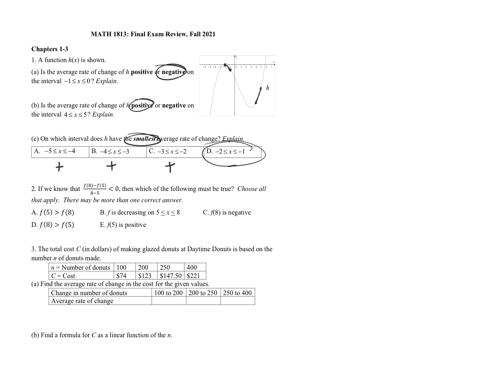Question two. We know that f(8) minus f(5) over eight minus five is less than zero, so that means this value is negative. We want to select what must be true. One thing to point out: eight minus five is three, and three is a positive value. So for this whole term to be negative, the top has to be negative — so f(8) minus f(5) is going to be less than zero.